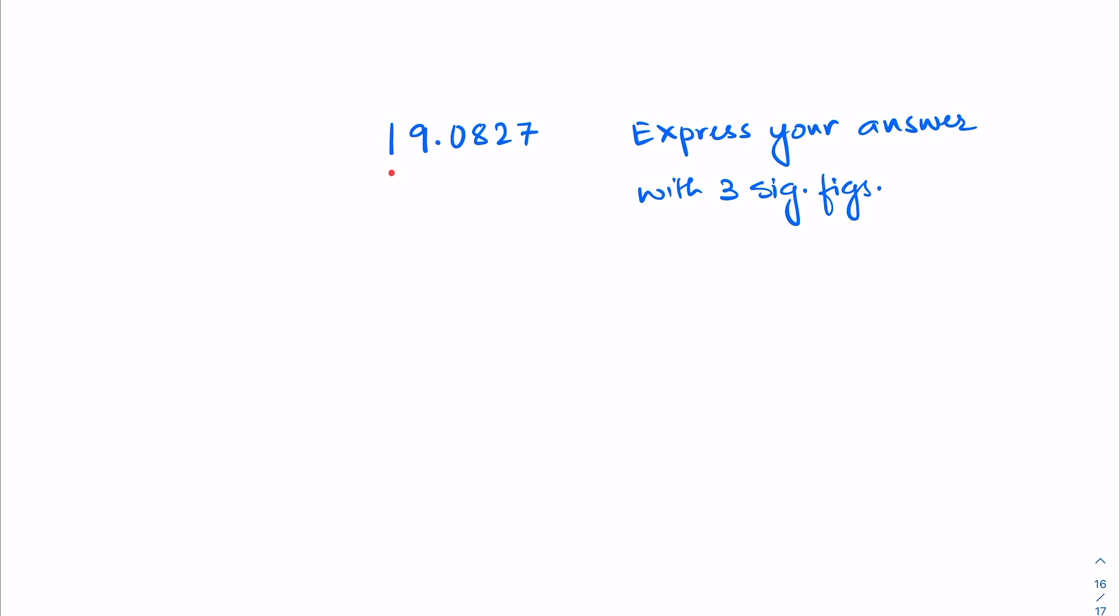To do this, you should start from the leftmost digit and count to one more place than the number of significant figures you need. If the digit in this place is 5 or greater, then you should add 1 to the previous digit and drop the rest of the numbers to the right of it.